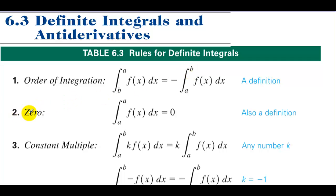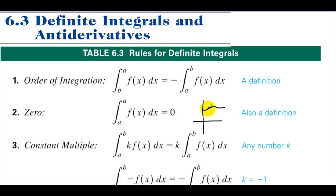We have the zero property: integrating from A to A is zero. Imagine you have some curve and we're going to find the area under the curve, integrating from one to one. Well, there's no area in a line.